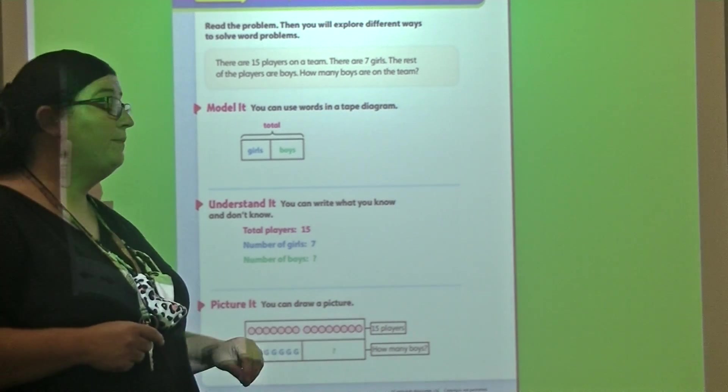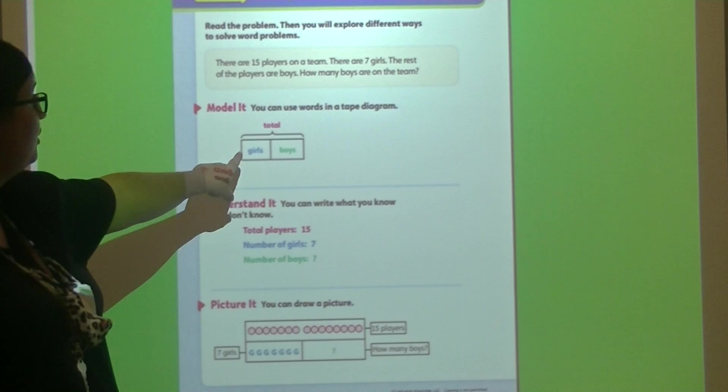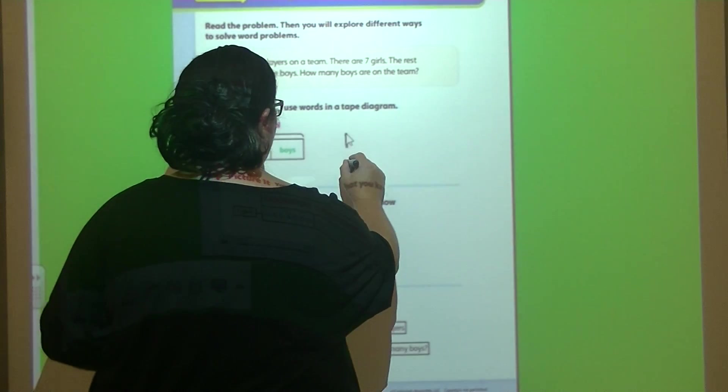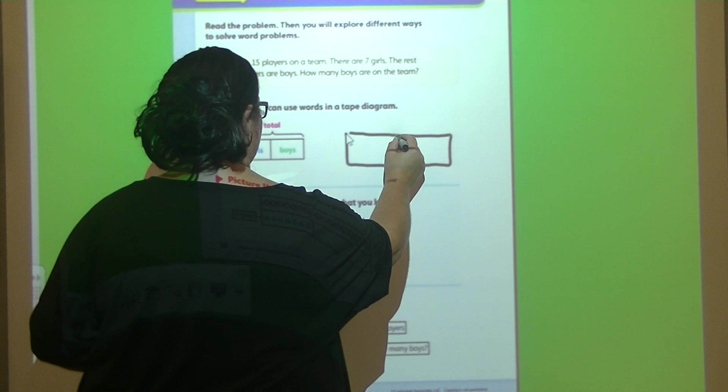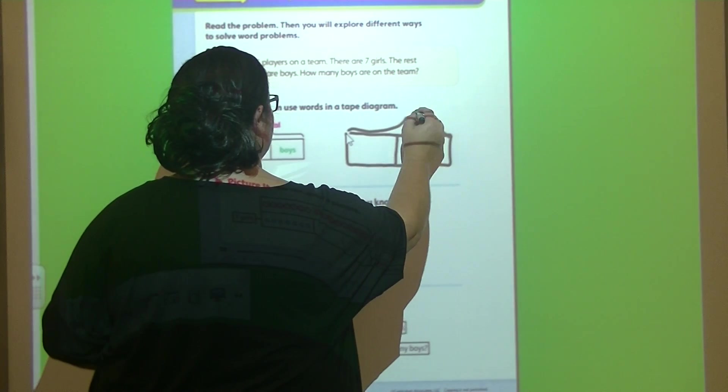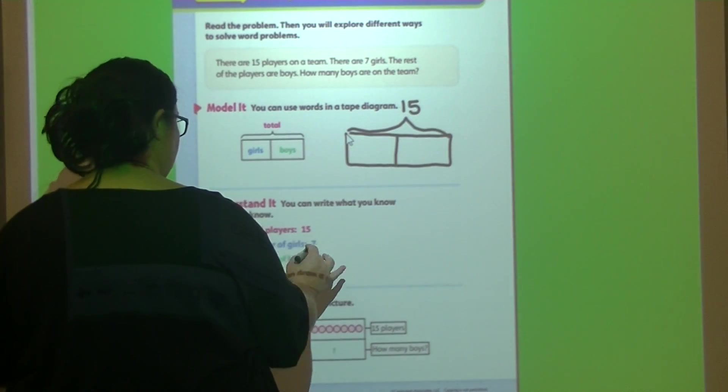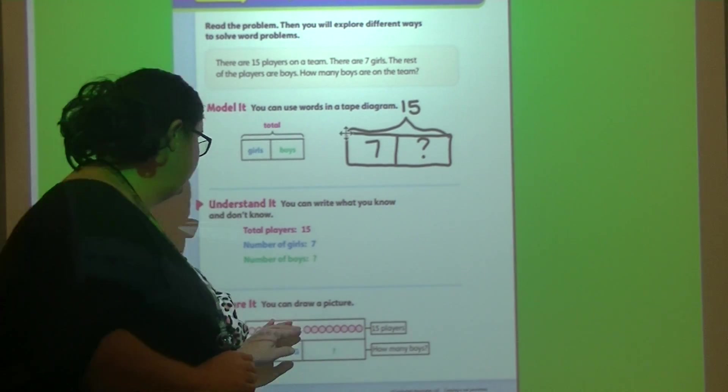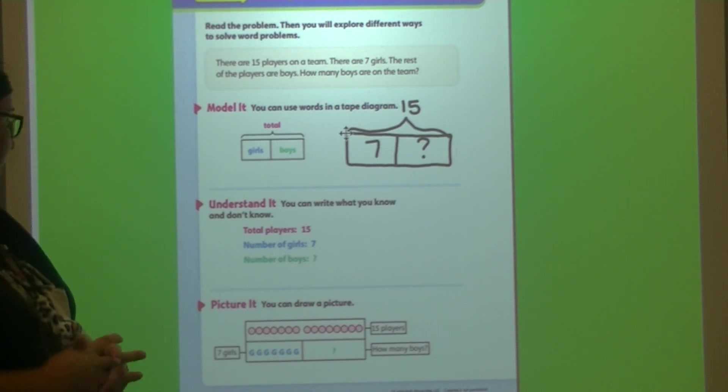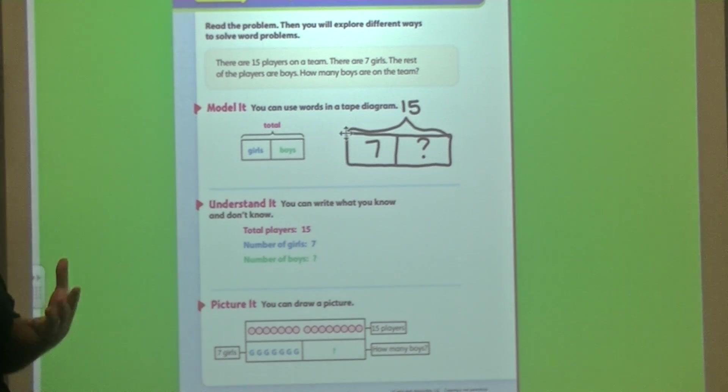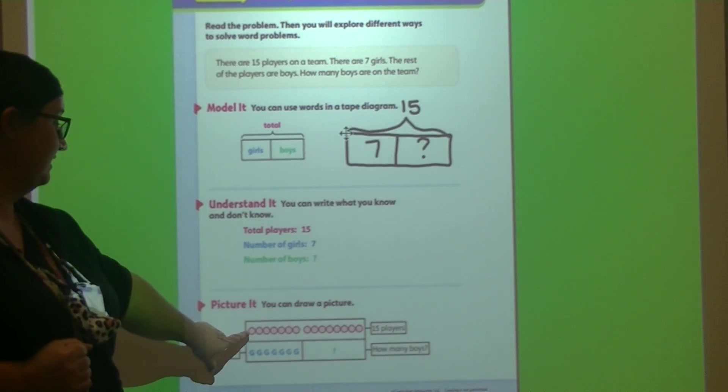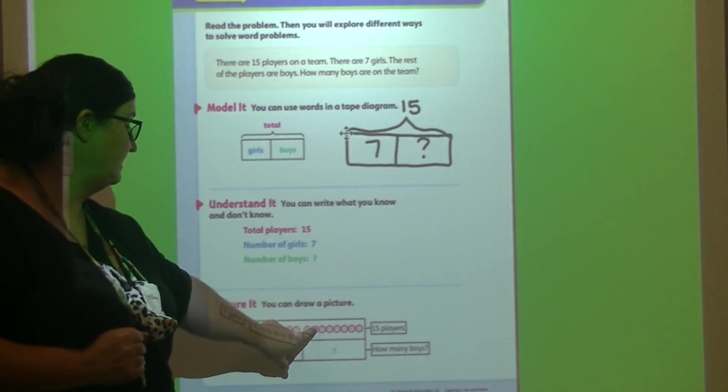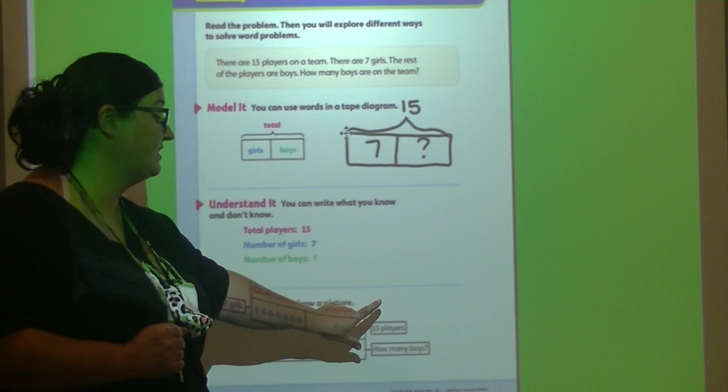Now, it says you can draw a picture. We could draw a picture. We could also use that tape diagram. So I could draw out my tape diagram here. I know my total is 15, and how many girls? 7. I need to find out how many boys. Or we could use our picture. So they have dots for the total number of players. Let's count the number of dots. Get ready. 1, 2, 3, 4, 5, 6, 7, 8, 9, 10, 11, 12, 13, 14, 15. How many players? 15 players.